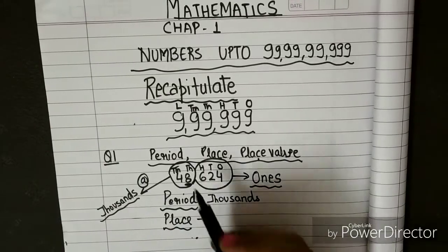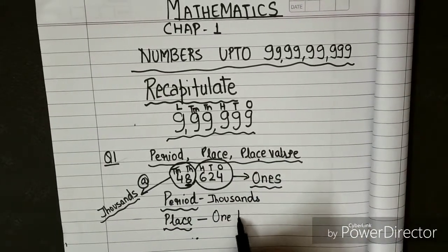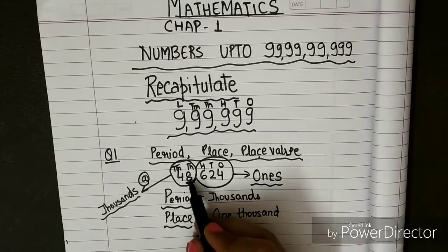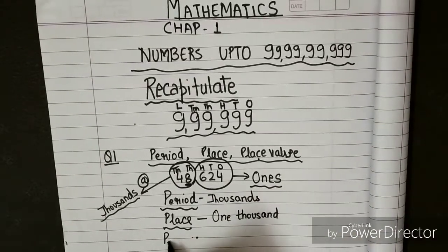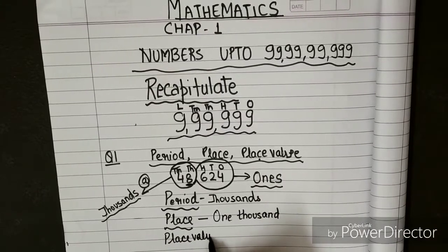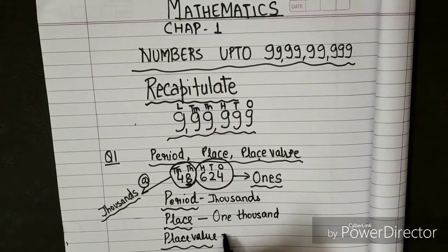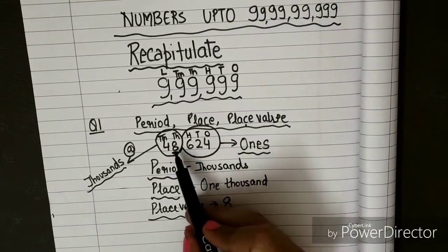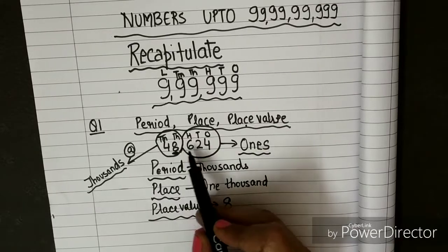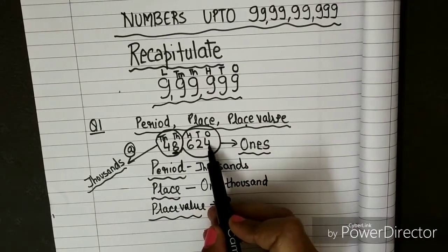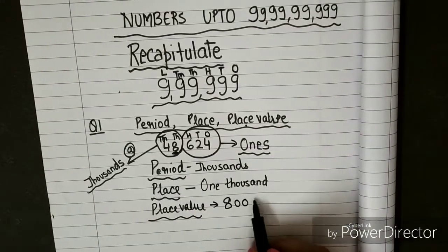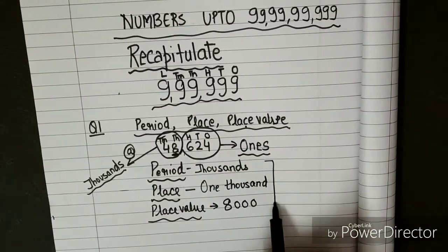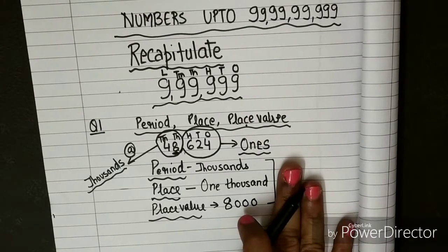8 belongs to the thousands place, and we can write it as 'thousand' or '1000'. Place means: what is the position in its house? And for value, I told you that we have to put zeros. So we write 8 and add zeros — how many zeros come with 1000? 1, 2, and 3. You can count the number of digits after it or write the zeros with 1000. These are things we already did in Class 4.